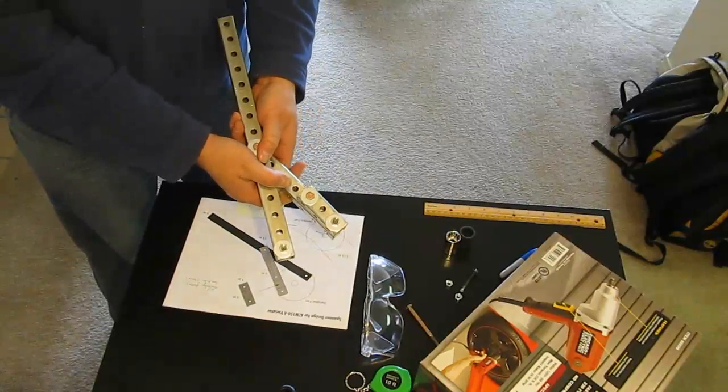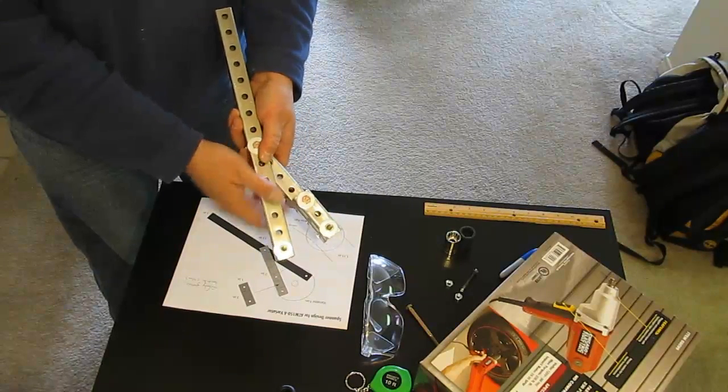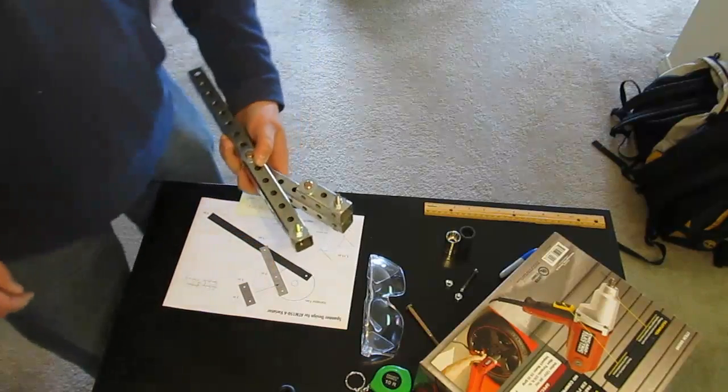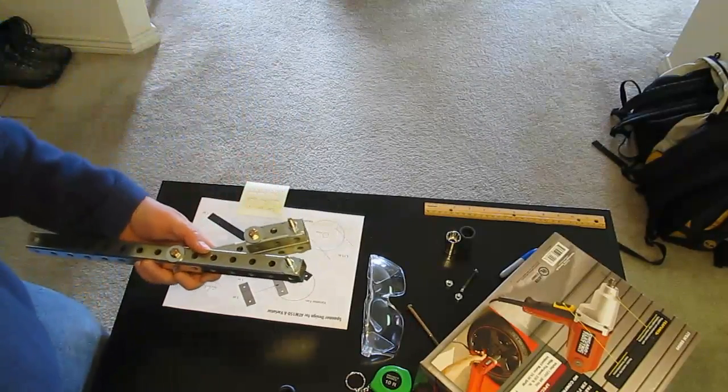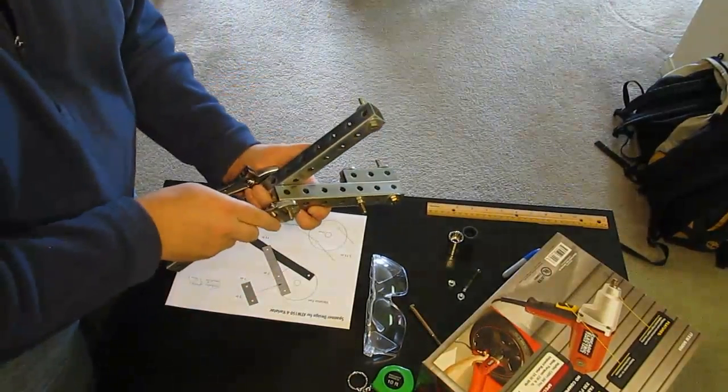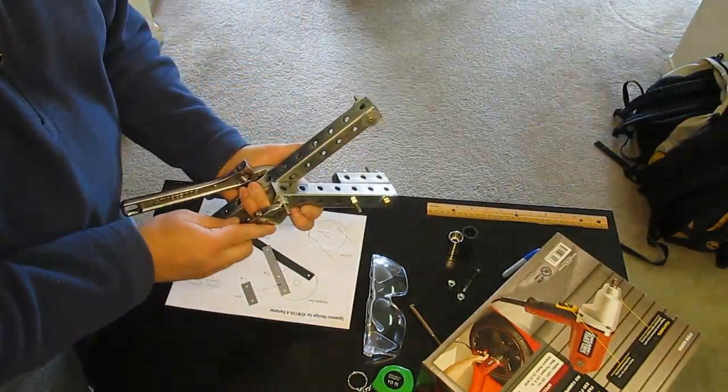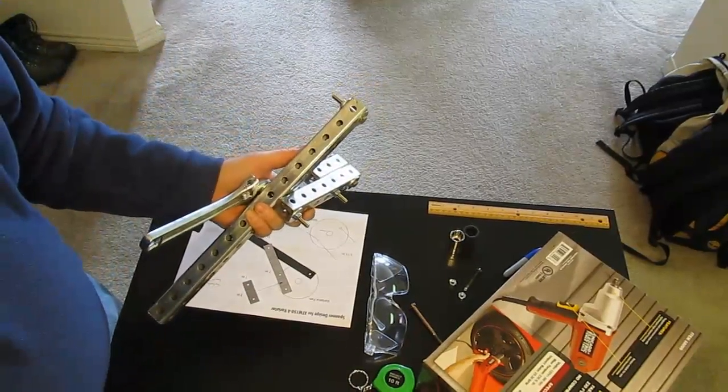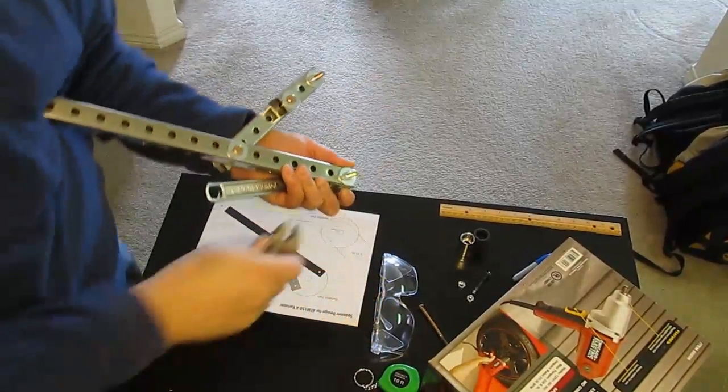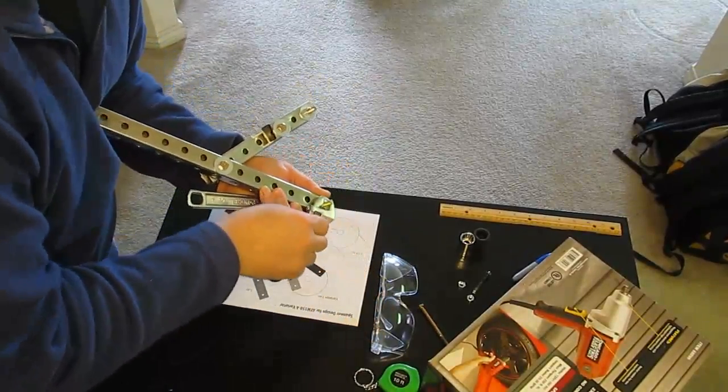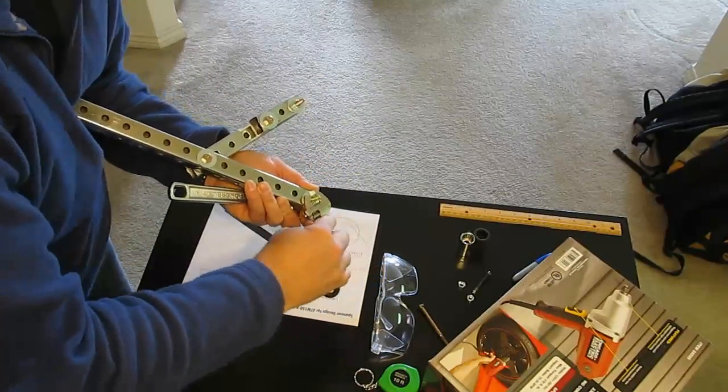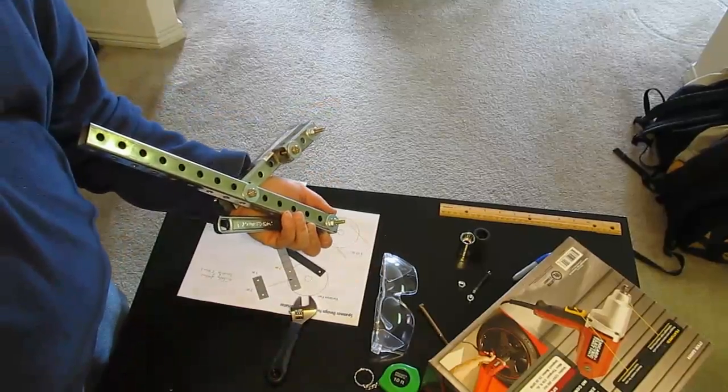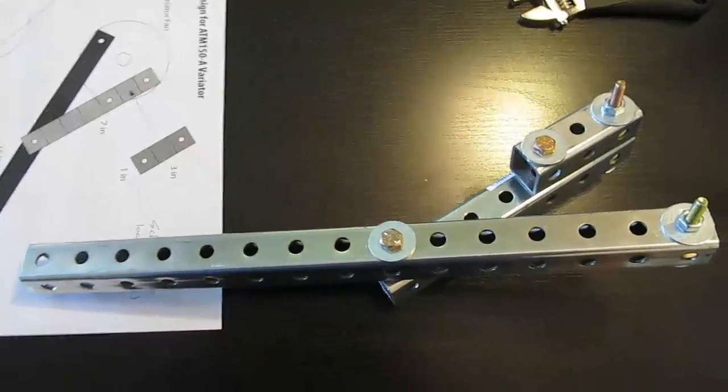So this is the side that's going to be inserted into the variator fan, these two here. And all I have to do is tighten them down. And here's the finished product.